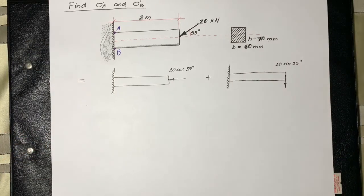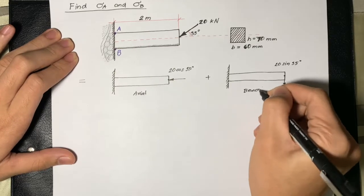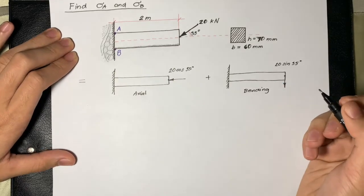The beam with the horizontal component represents the axial stress while the other one represents the bending stress.